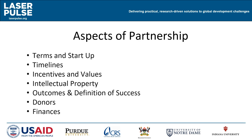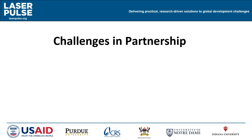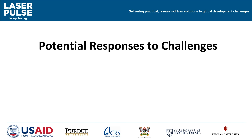While deep collaboration is ideal, it's not always easy. Sometimes deep collaboration can be difficult, particularly as partners wrestle with aspects such as different organizational culture, structures, and systems; establishing the terms of the arrangement; timelines; incentives and values; approaches to intellectual property; definitions of success; and approaches toward donors and finances. Think about a time in your experience where you have gone through some challenges in a partnership — what kinds of things did you find difficult, and what might be some ways to respond to those challenges?